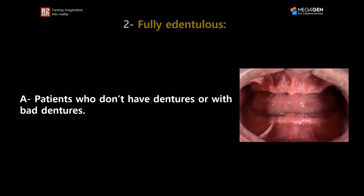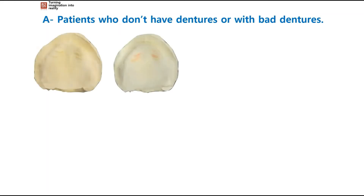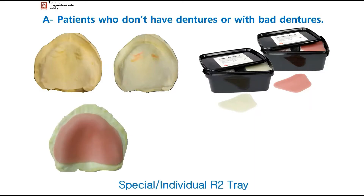For patients who don't have dentures or have bad dentures, we always start with an impression. Then the next step is to make what we call a special or individual R2 tray. As discussed earlier, the R2 tray is a radiopaque tray, which means it shows up in the CBCT — and that's exactly what we want. The standard R2 tray will not fit in a fully edentulous patient's mouth, so we need to fabricate a special R2 tray.